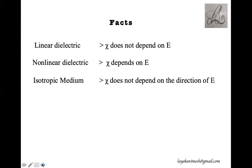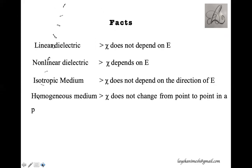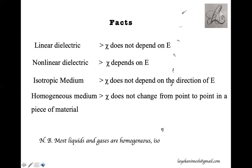Sometimes dielectric susceptibility depends upon the direction of the electric field. In the case of an isotropic medium, susceptibility does not depend on the direction of the applied electric field. A homogeneous medium is one in which susceptibility does not change from point to point within a piece of material; once it changes, the medium is said to be non-homogeneous. Most liquids and gases are homogeneous, isotropic, and linear.